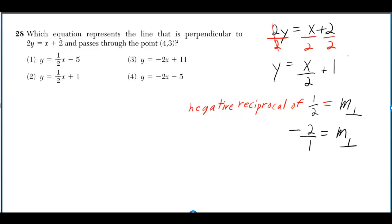Which equation represents the line that is perpendicular to 2y is equal to x plus 2 and passes through the point (4, 3)?